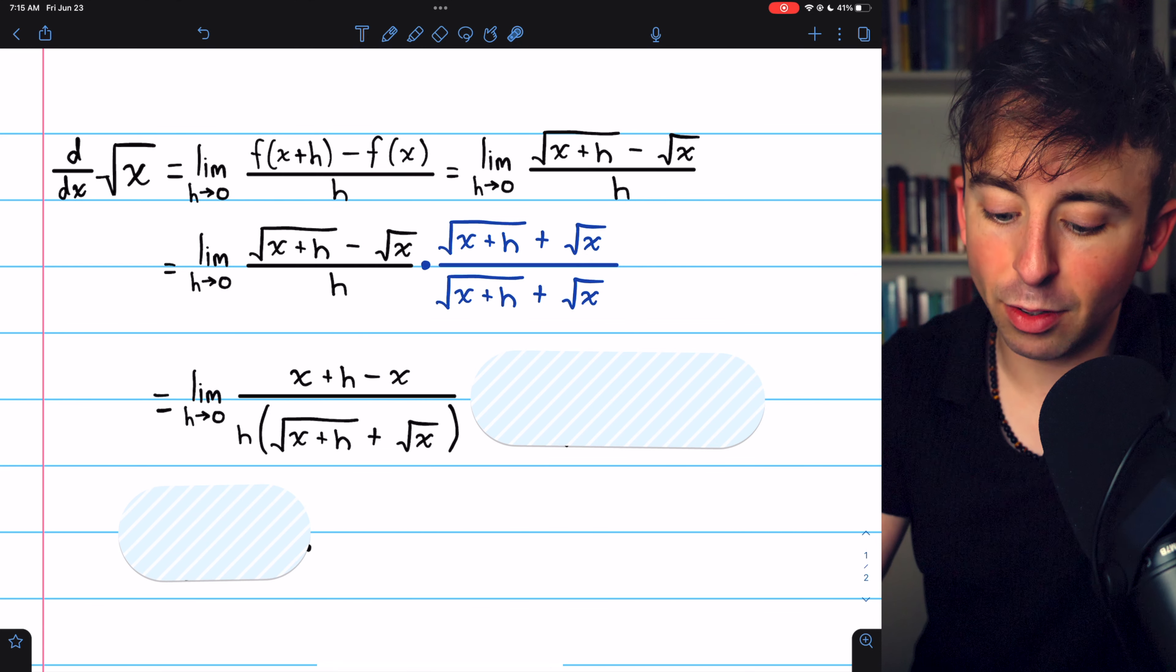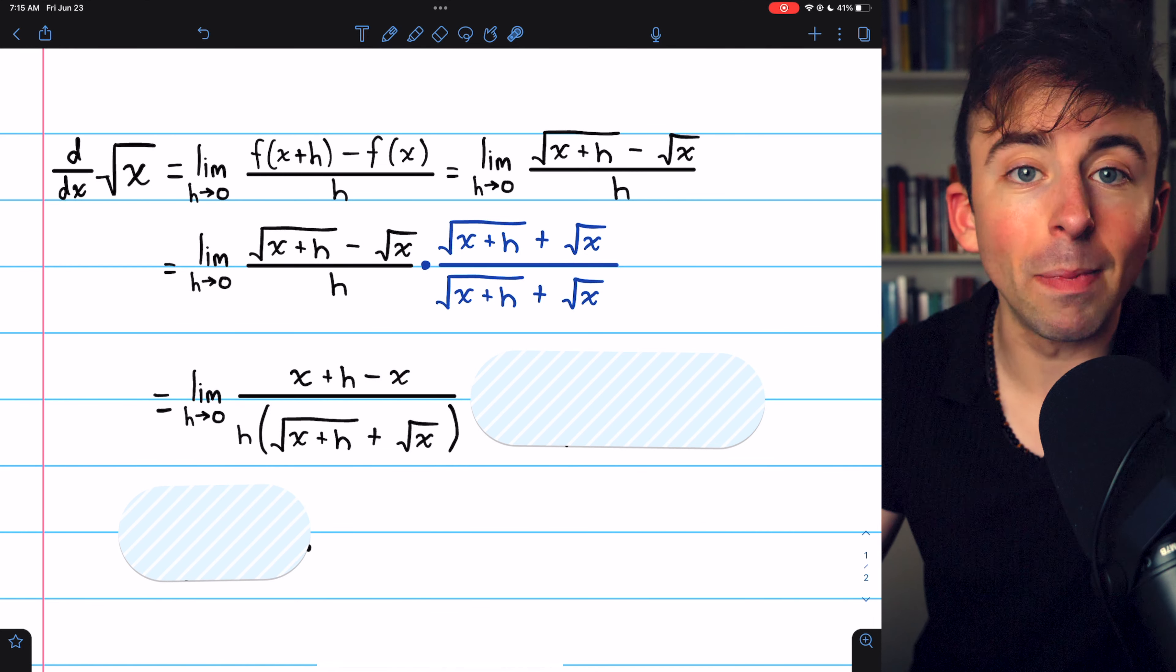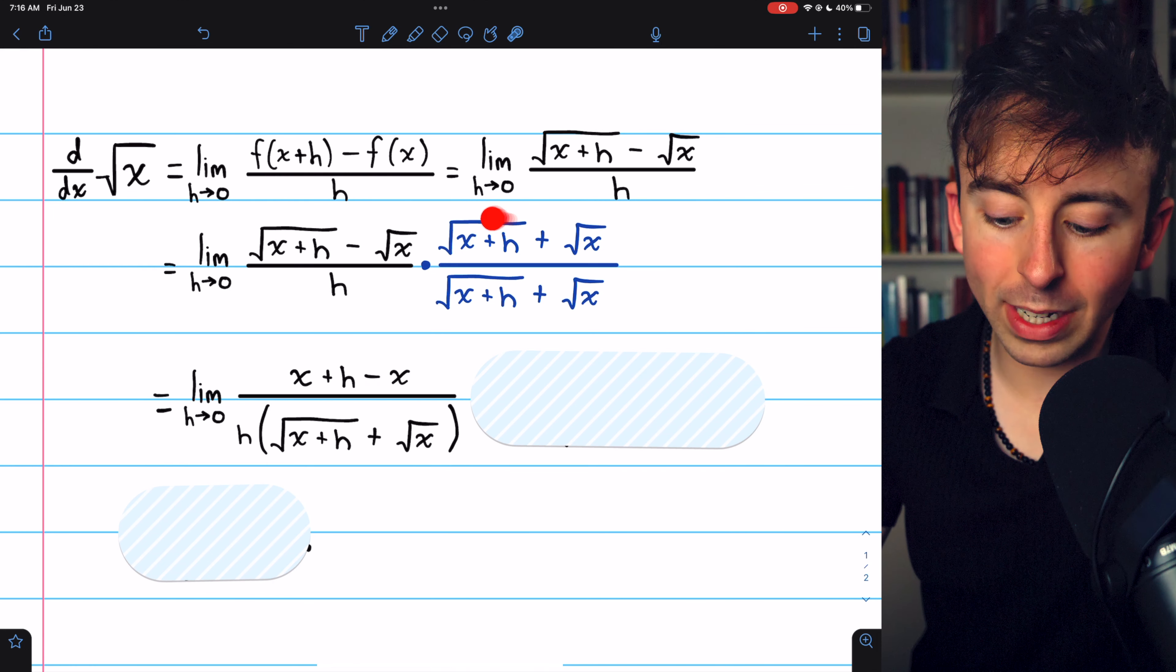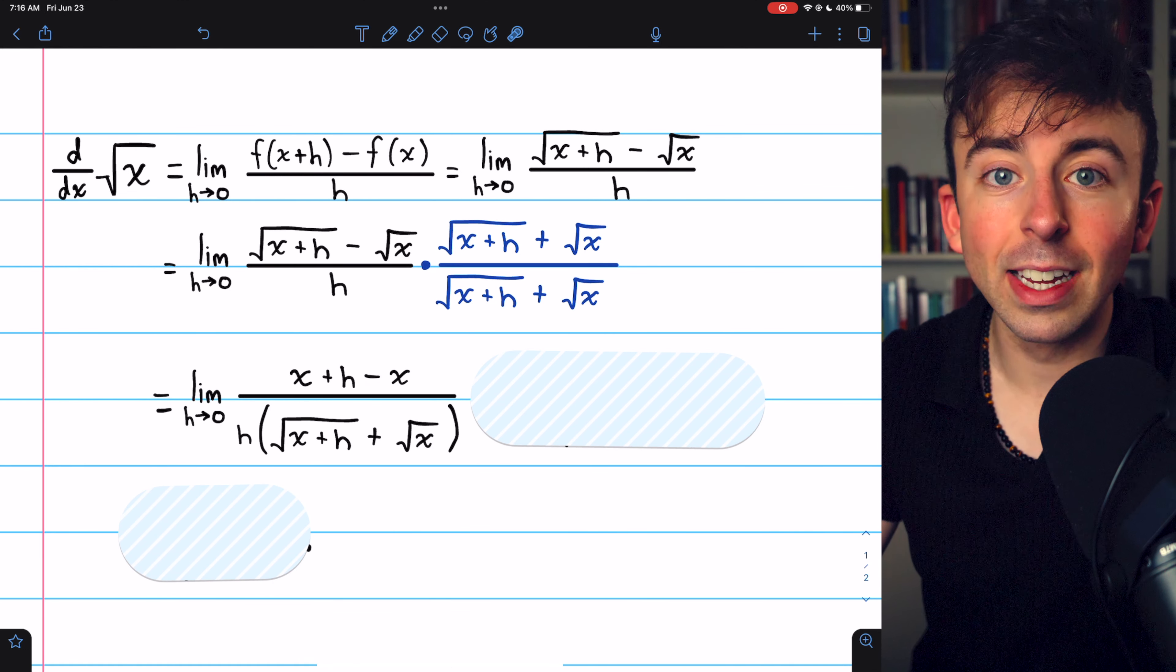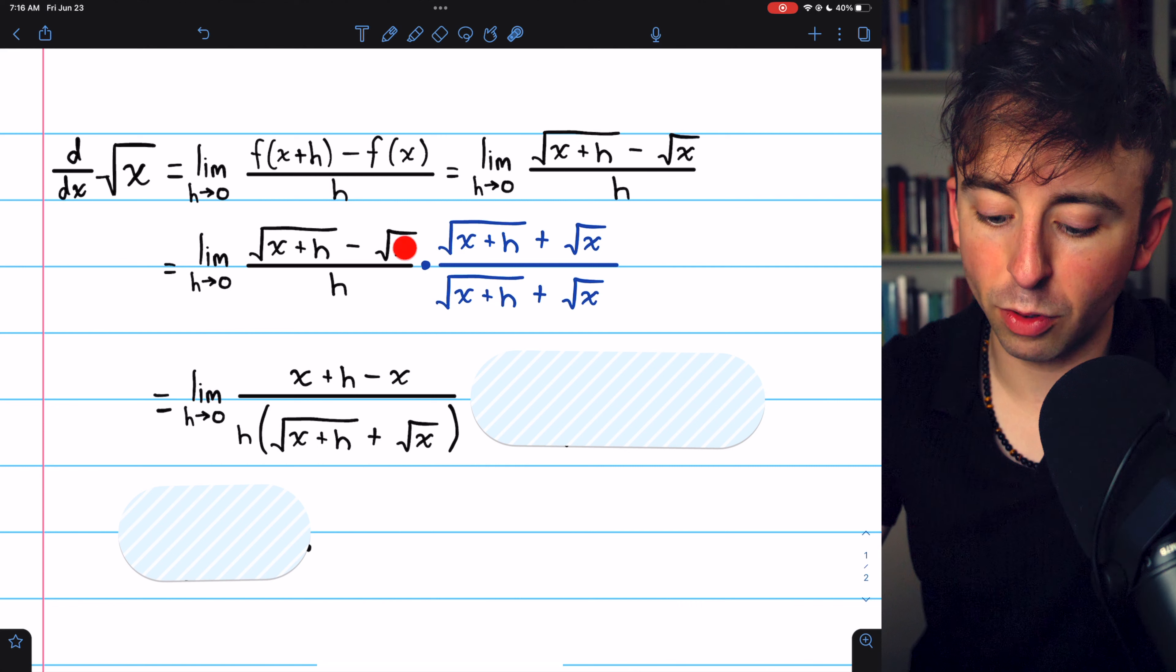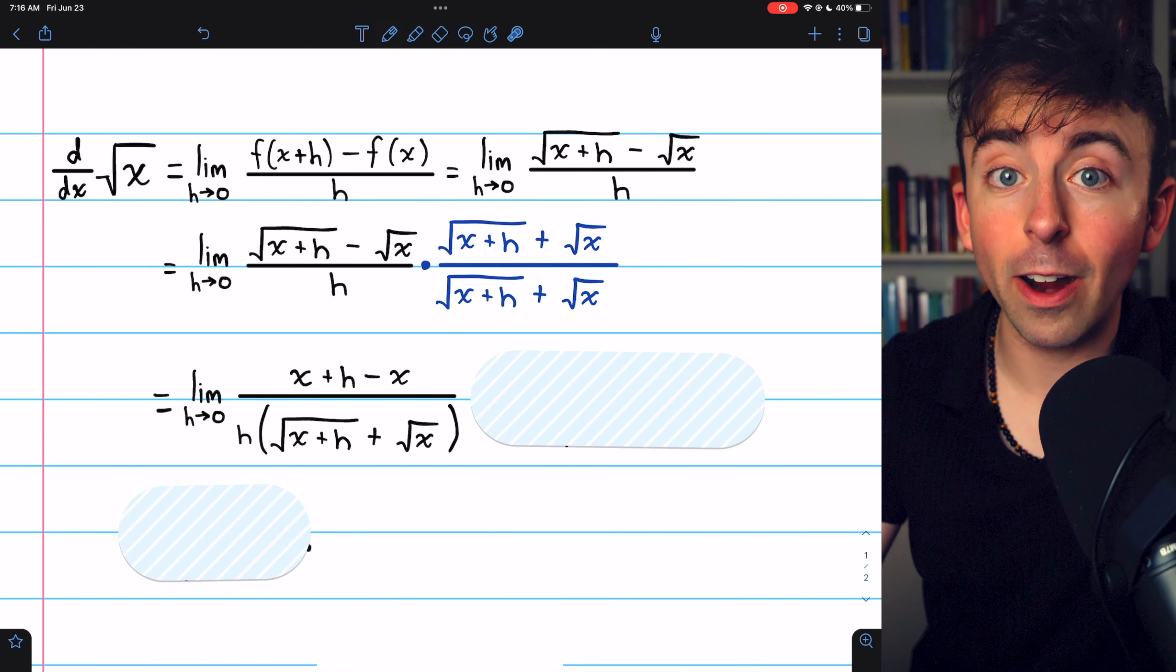And instead of minus root x, we'll have minus x. That's the whole point of the conjugate in this situation, to turn the sum or difference of square roots into the difference of squares.